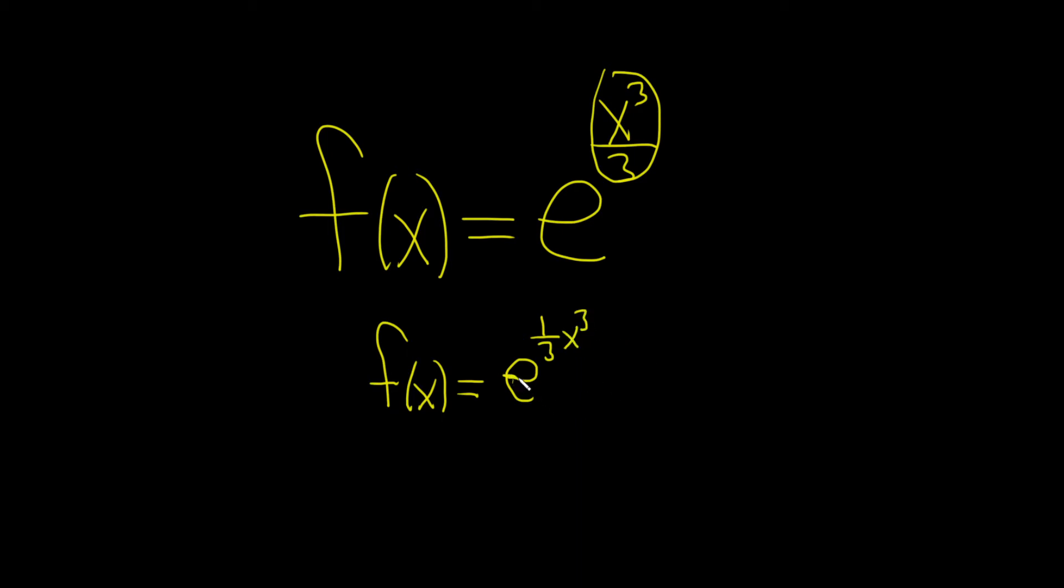And the reason I'm doing that is because when we take this derivative, we're going to have to use the chain rule. So basically we'll just get this and then we'll multiply by the derivative of the inside. And it's just easier to think about the derivative of the inside when it's written this way. So watch.